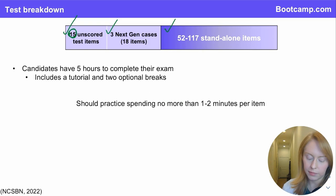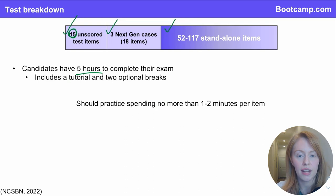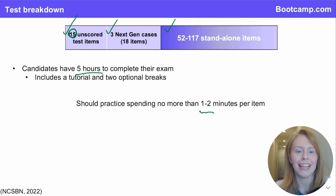The total duration of the exam is five hours, including a tutorial at the beginning and two optional breaks. So that comes out to roughly one to two minutes per question. And we do recommend that you use the timer function during your practice so that you can get that one to two minute per question pace down.